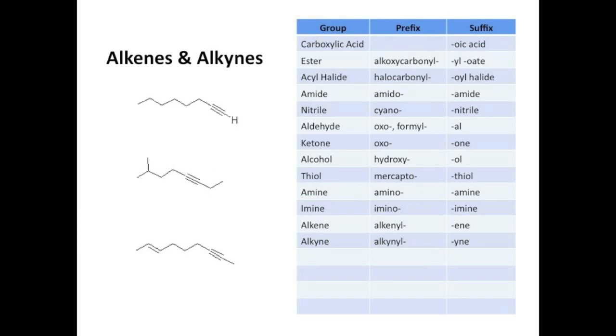Now, onto alkynes. Y-N-E replaces A-N-E, so the first example is 1-octyne. The second example is 7-methyl-3-octyne. The last example is both an alkene and an alkyne. Whichever group has the lowest number gets it, but when the same lowest number is achieved in either direction, like we have here, tie goes to the alkene, which makes this 2-nonen-7-yne.